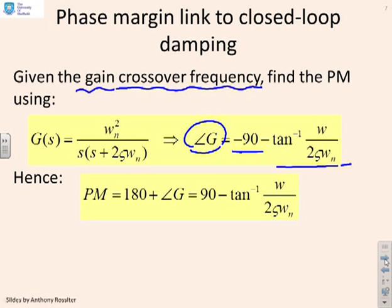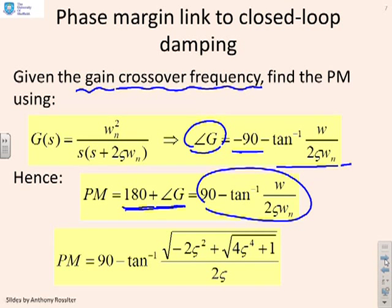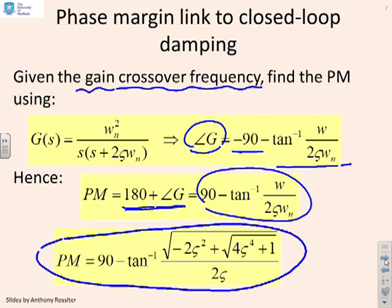The phase margin is 180 plus the argument of G at the gain crossover frequency. Plugging in omega from the previous page gives this phase margin formula. No one will ask you to repeat this algebra—we're showing the steps so you know where they come from.